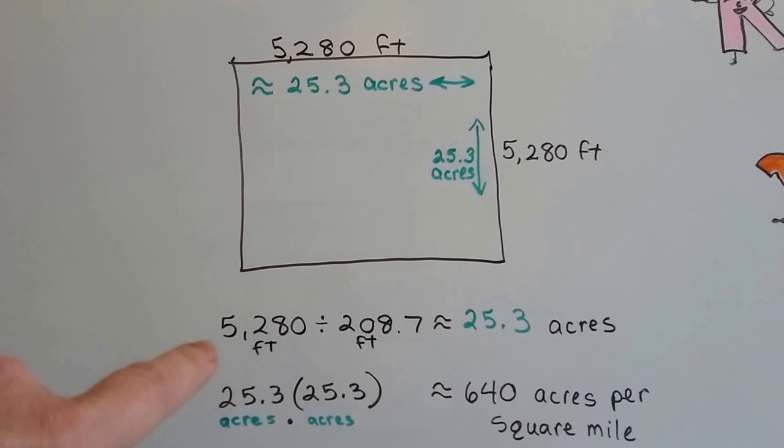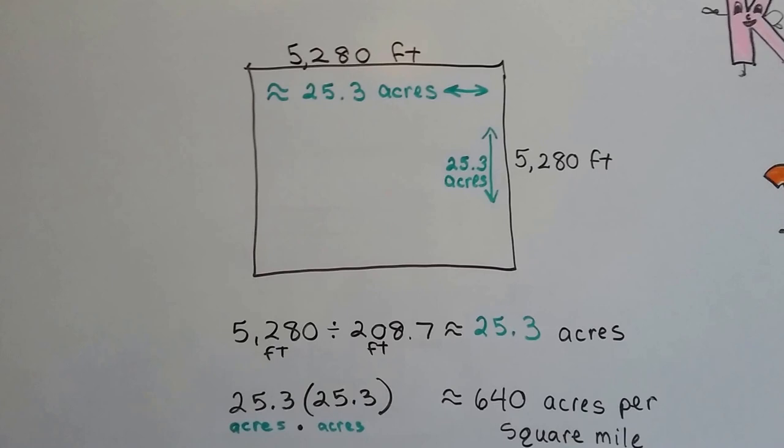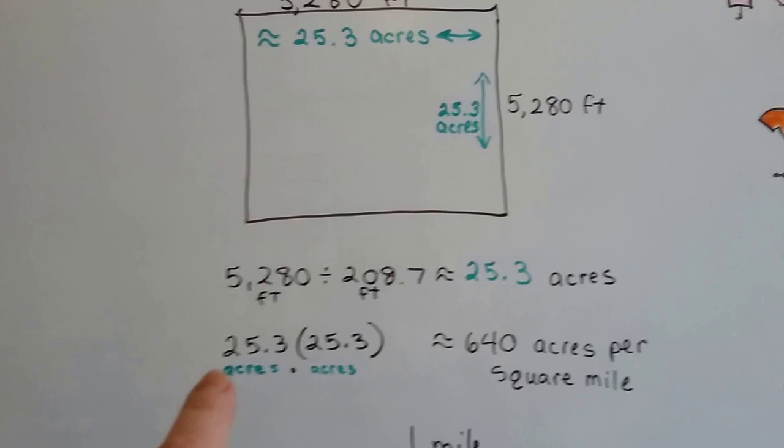So we could take this 5,280 and divide it by this 208.7. And that's how I got the 25.3 acres in a mile. Because that's one acre. That's one mile.